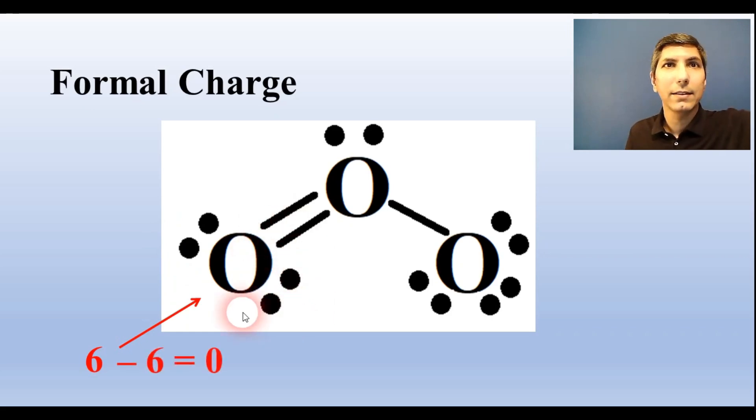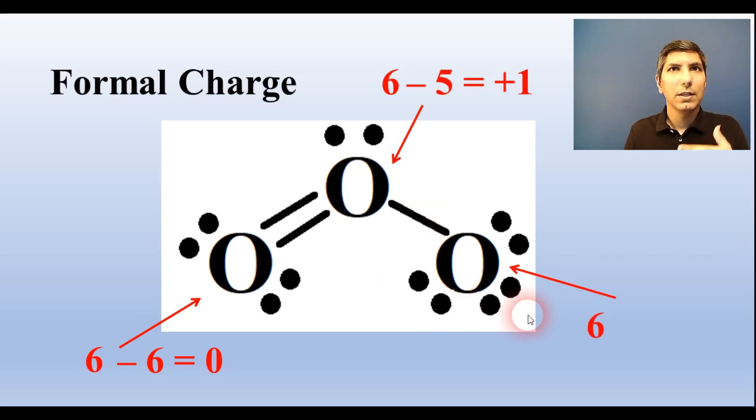So for example, in ozone, on the first atom, oxygen has six valence electrons, then we subtract for the dots one, two, three, four, and there are two bonds here, so that makes six. So that equals zero: 6 - 6 = 0. Then on the second atom we have one, two dots up here, and then there are three bonds: three, four, five, so that makes five. 6 - 5 = +1. On the third atom over here we have one, two, three, four, five, six, and there's one bond, so that makes seven. So 6 - 7 = -1.